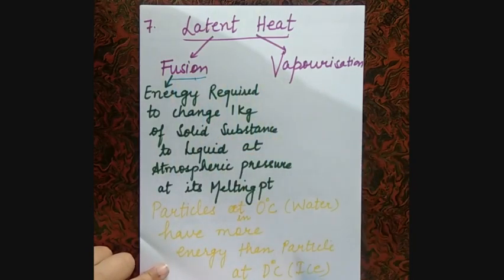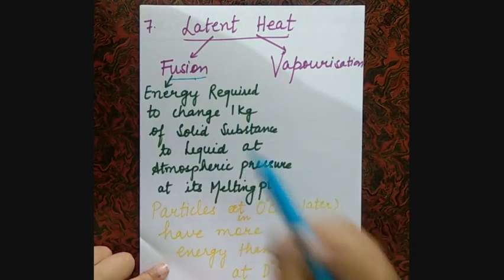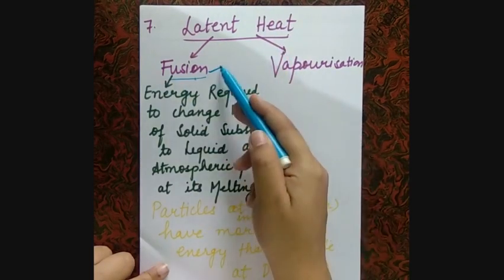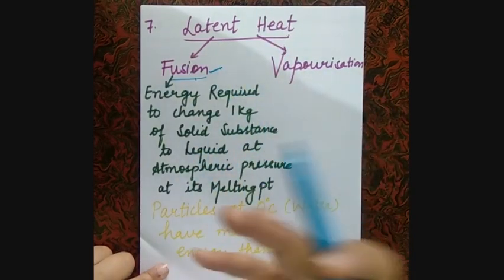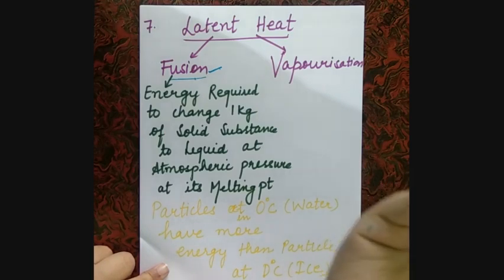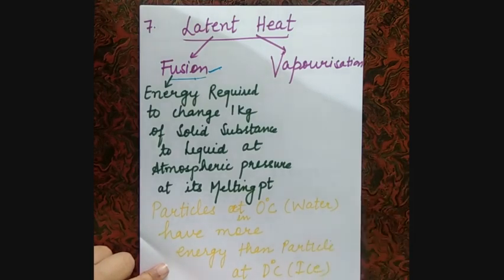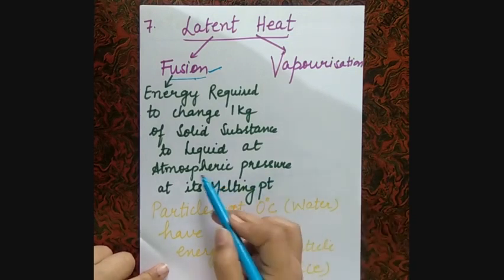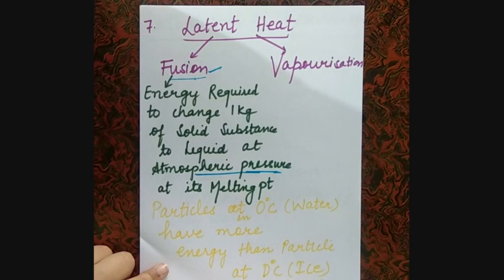If you give heat to a solid, the temperature starts rising linearly. In latent heat of fusion, we need to convert 1 kg of solid to liquid. When do we convert? At atmospheric pressure. What is atmospheric pressure? At sea level it is 1 atmosphere — also called normal atmospheric pressure.